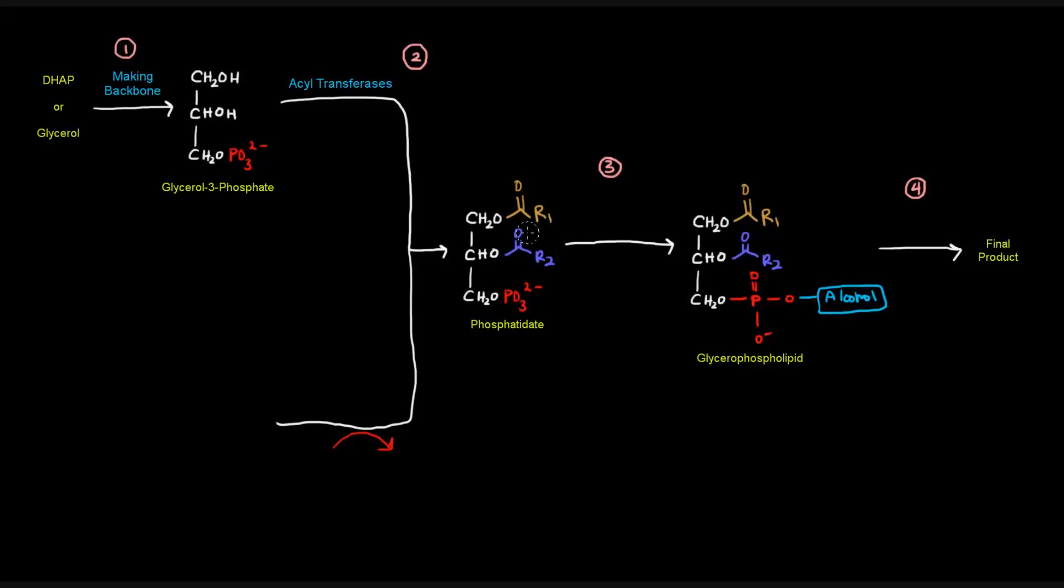Once we have that, we want to add our polar head group, specifically by adding an alcohol of some sort to this phosphate group that's already here in phosphatidate. So we have an alcohol group here. So that's going to be the addition of the polar head group. Of course, the phosphodiester bonds are going to be there.